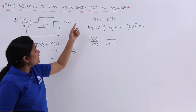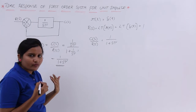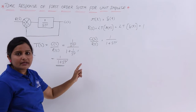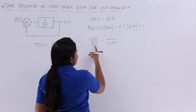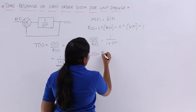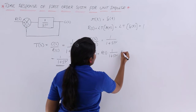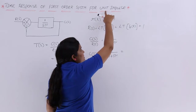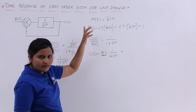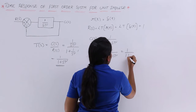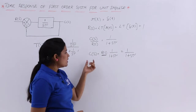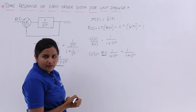I need to find C(t). The way to find C(t) is: first find C(s), then apply the inverse Laplace transform to get C(t). To get C(s), I rearrange so that C(s) = R(s) · 1/(1 + sτ). Since we are giving unit impulse as input, R(s) = 1. Therefore, C(s) is equivalent to 1/(1 + sτ).